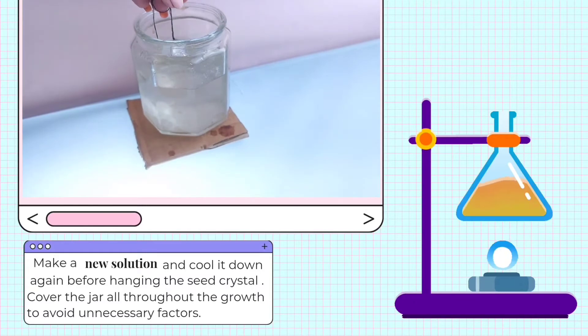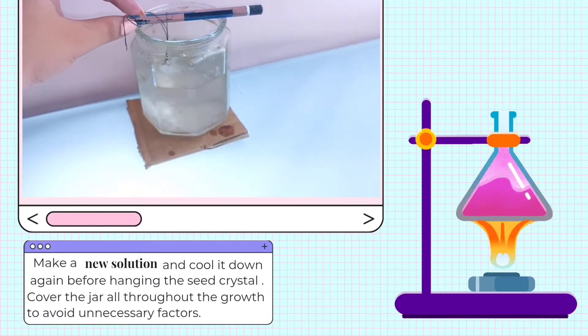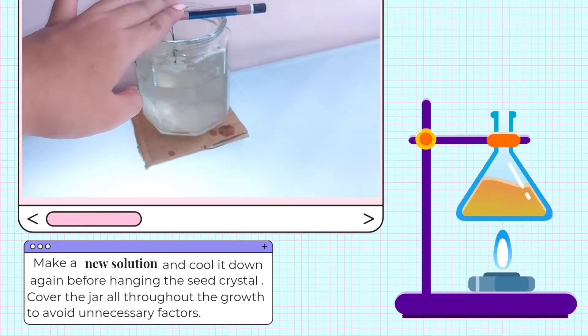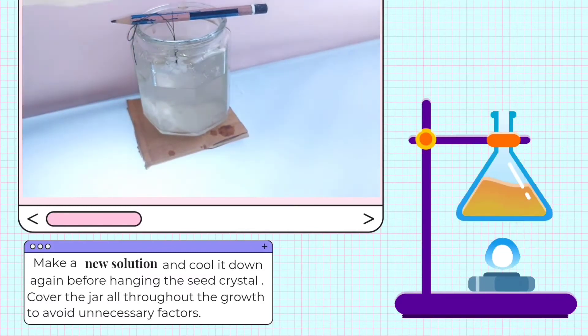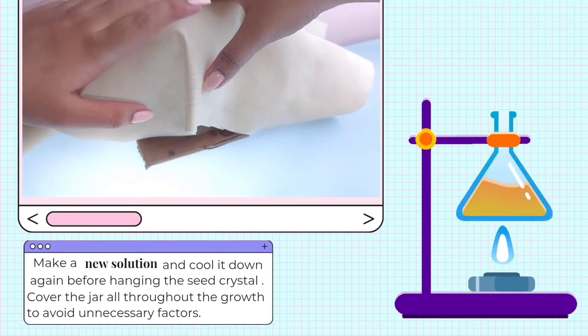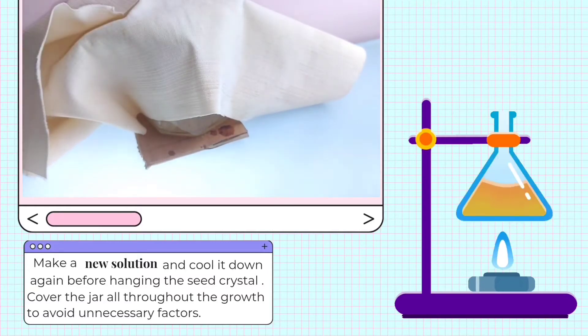Carefully hang the seed crystal on the jar. Then cover the top of the jar. To keep out dust and dirt, generously cover the jar with a piece of cloth. Dust and dirt particles can mess up the crystal formation.